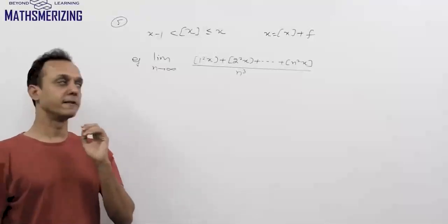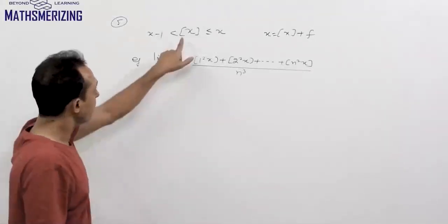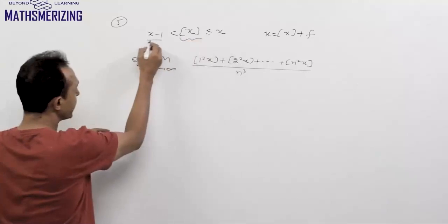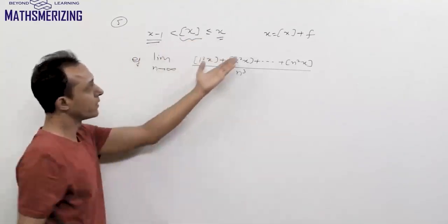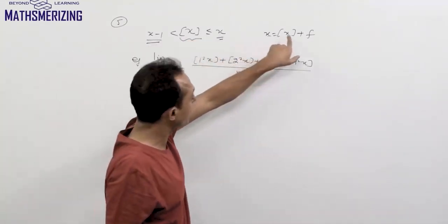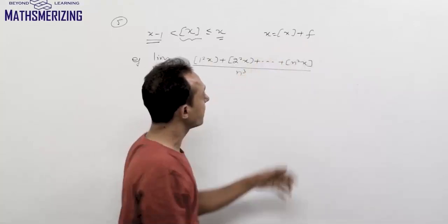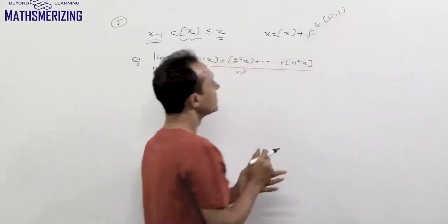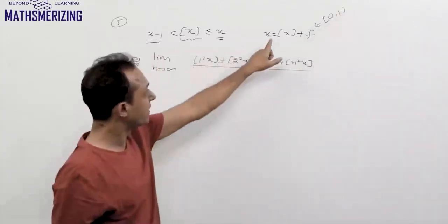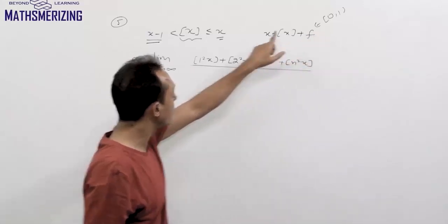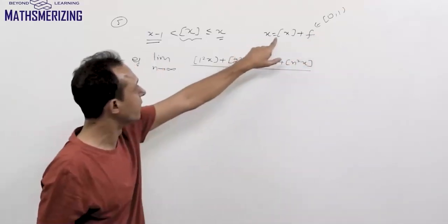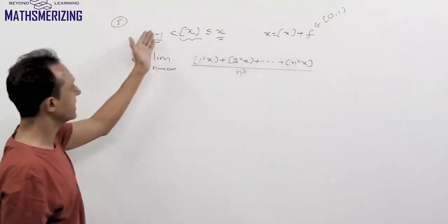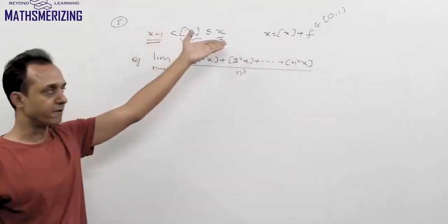The fifth property of the greatest integer function is that GIF(x) lies between x minus 1 and x. We know that any x equals GIF(x) plus f, where f belongs to [0,1). So GIF(x) plus some fractional value gives x, meaning its maximum value is simply x, and x minus 1 is always less than the GIF value.